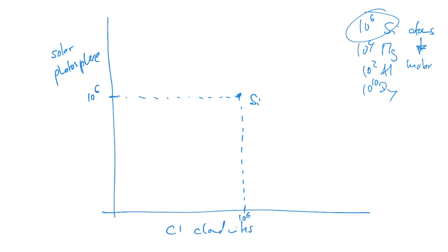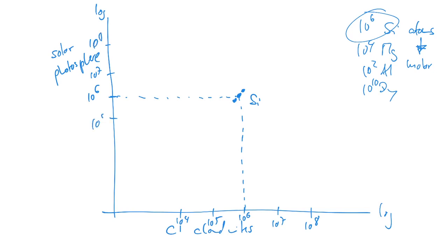Iron and magnesium have very similar compositions to silicon in CI chondrites and also in the photosphere, so they plot somewhere near the crossover. The axes are logarithmic, meaning above silicon we have 10 to the 7, 10 to the 8, and so on, and below we have 10 to the 5, 10 to the 4, and so on — and the same applies on the y-axis.